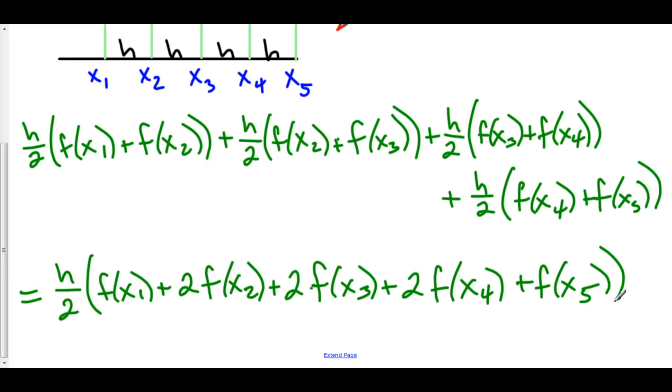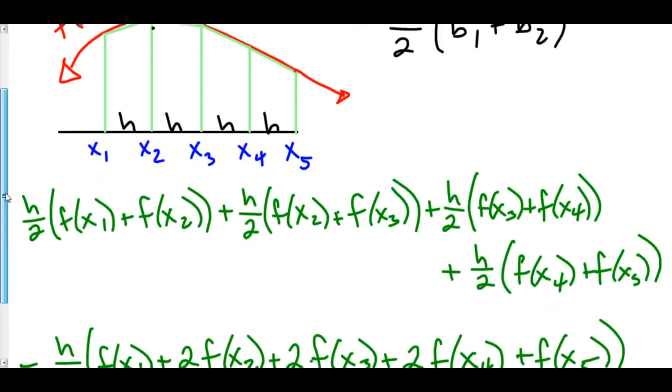If you have a uniform base among all of your trapezoids, then we have h over 2 times f of x sub 1 plus 2 times each of your interior function values plus f of x sub 5. Now the question is, why are we multiplying each of the interior function values by 2?